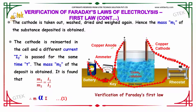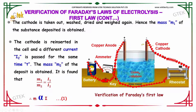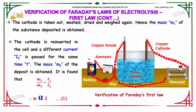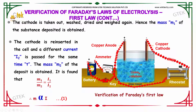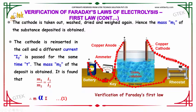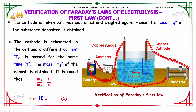The cathode is taken out, dried, and weighed again. Hence the mass M1 of the substance deposited is obtained. We are able to see that something is deposited here.